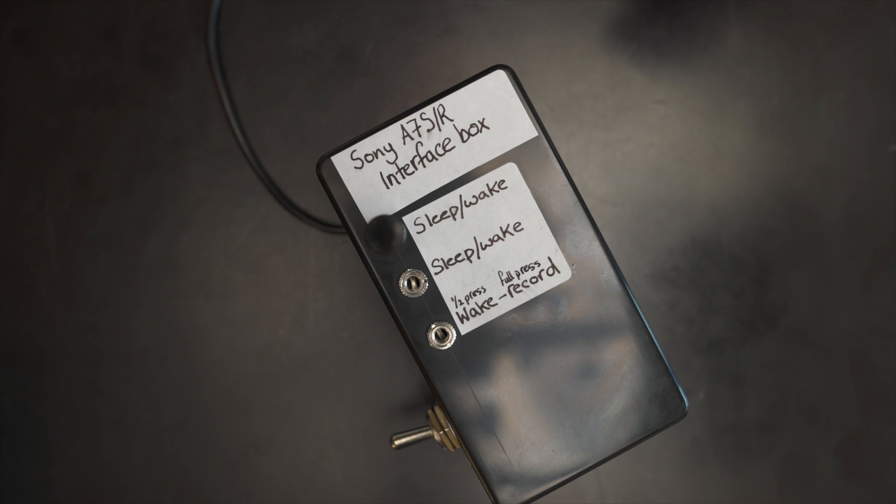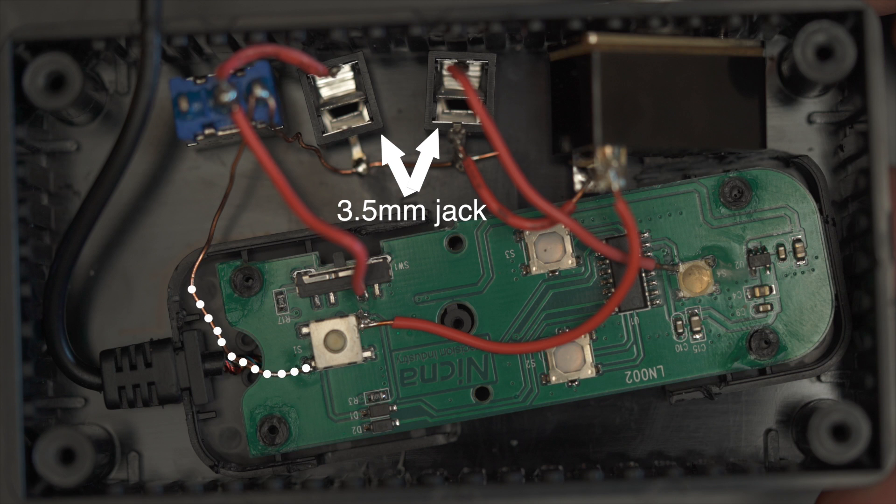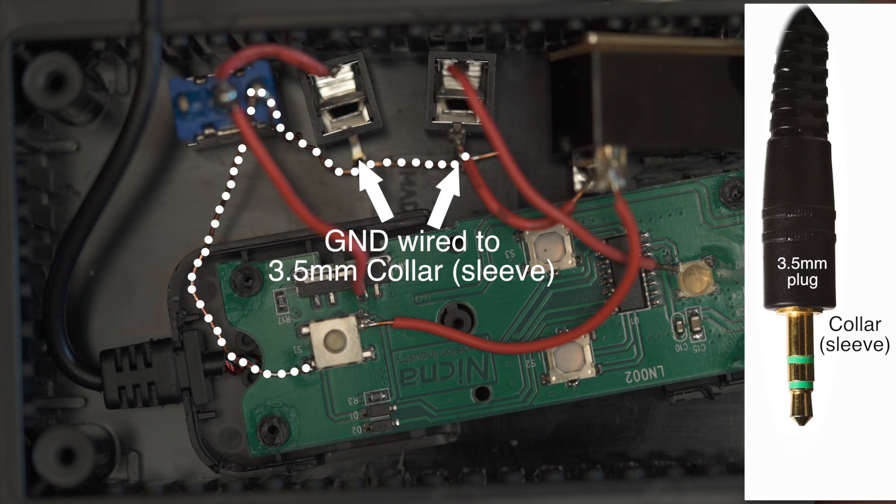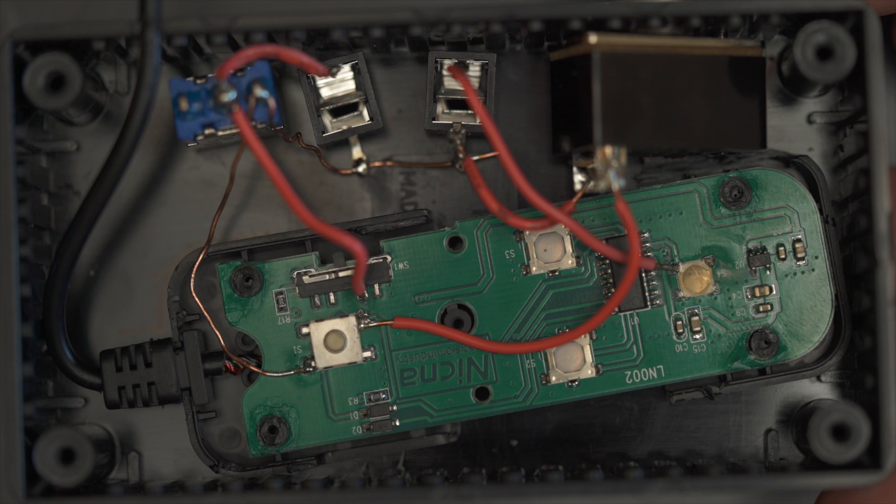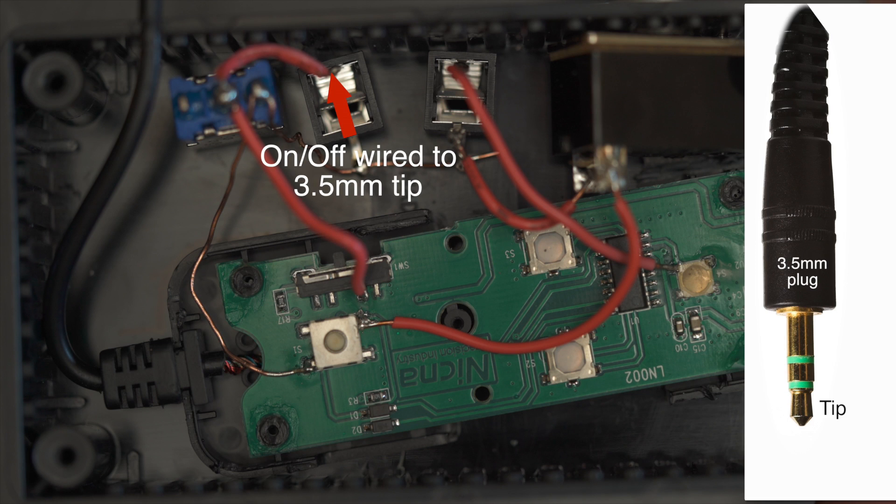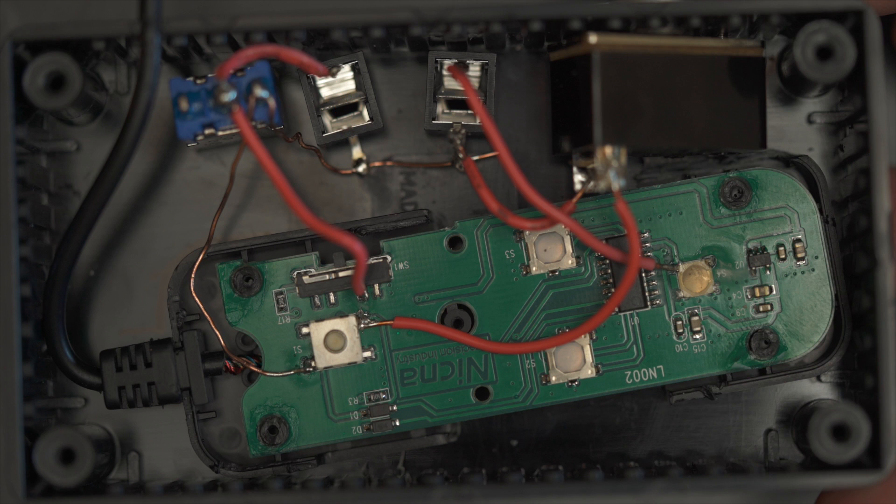Using two 3.5mm jack sockets, I then wired the ground to the collar part of each of these sockets. And then it was just a case of assigning a function to a socket. So on one socket, I assigned a power on-off function. So closing a circuit through that socket would turn the camera on or off.